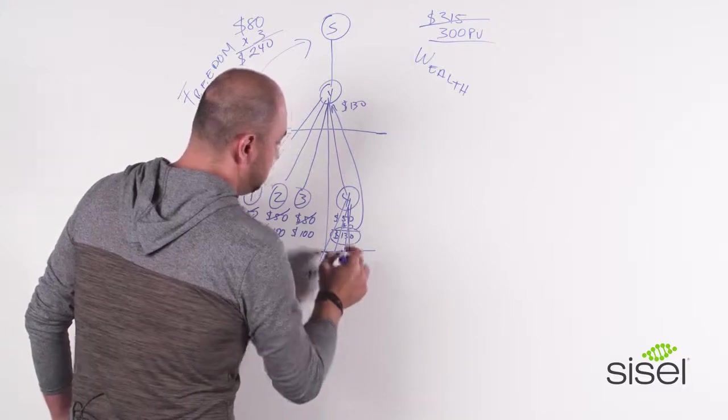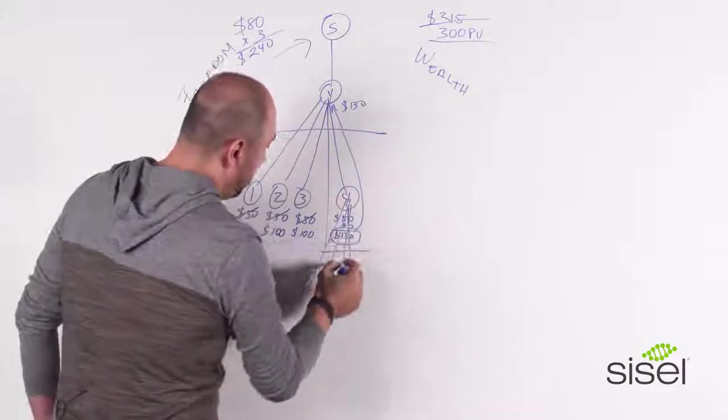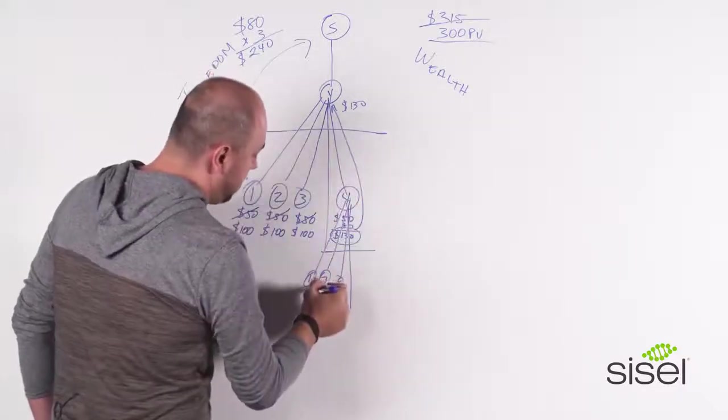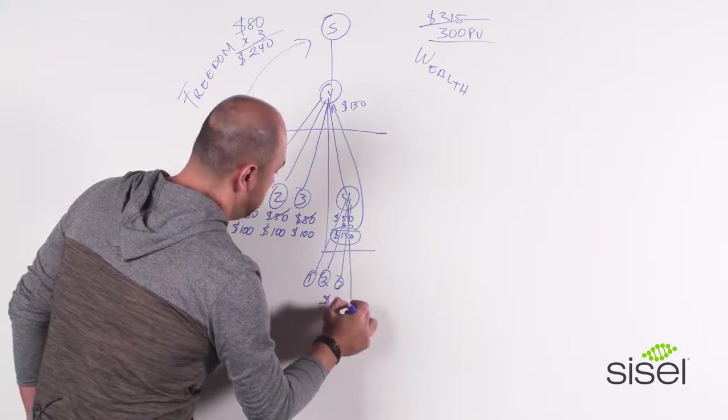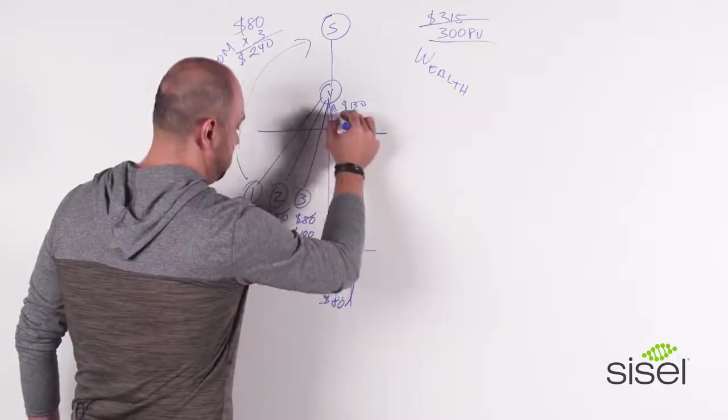Number four is going to get their $50 each. So now, because your number four qualified, the $80 that your sponsor was getting, now you will be receiving it.